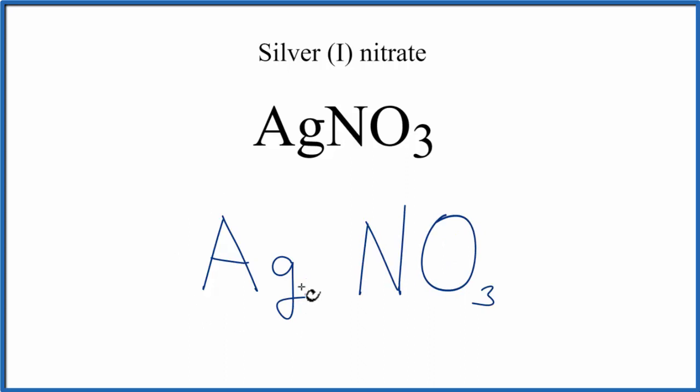Silver has one valence electron, and typically it has a plus one charge. So the silver is going to transfer that one electron to the NO3. Because silver loses an electron, it transfers it, and electrons are negative, that makes silver one plus.